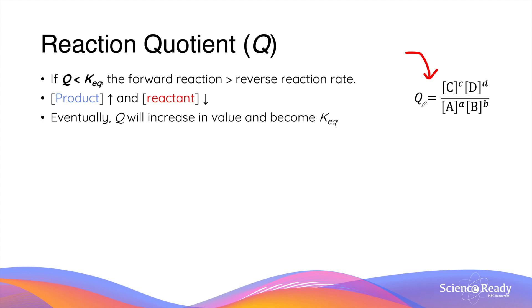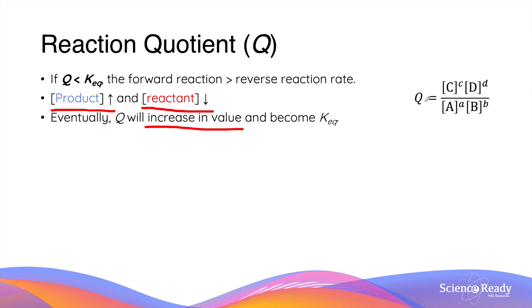It is important to understand those relationships before we move on. If the calculated reaction quotient is smaller than the equilibrium constant of the reaction, then we will have more reactants and less products at that instance compared to the concentrations at equilibrium. This would mean the forward reaction rate will be faster than the reverse reaction rate. Over time, we will produce more products, so the concentration of products will increase and the concentration of reactants will decrease. The value of the reaction quotient will therefore increase as products increase and reactants decrease over time.